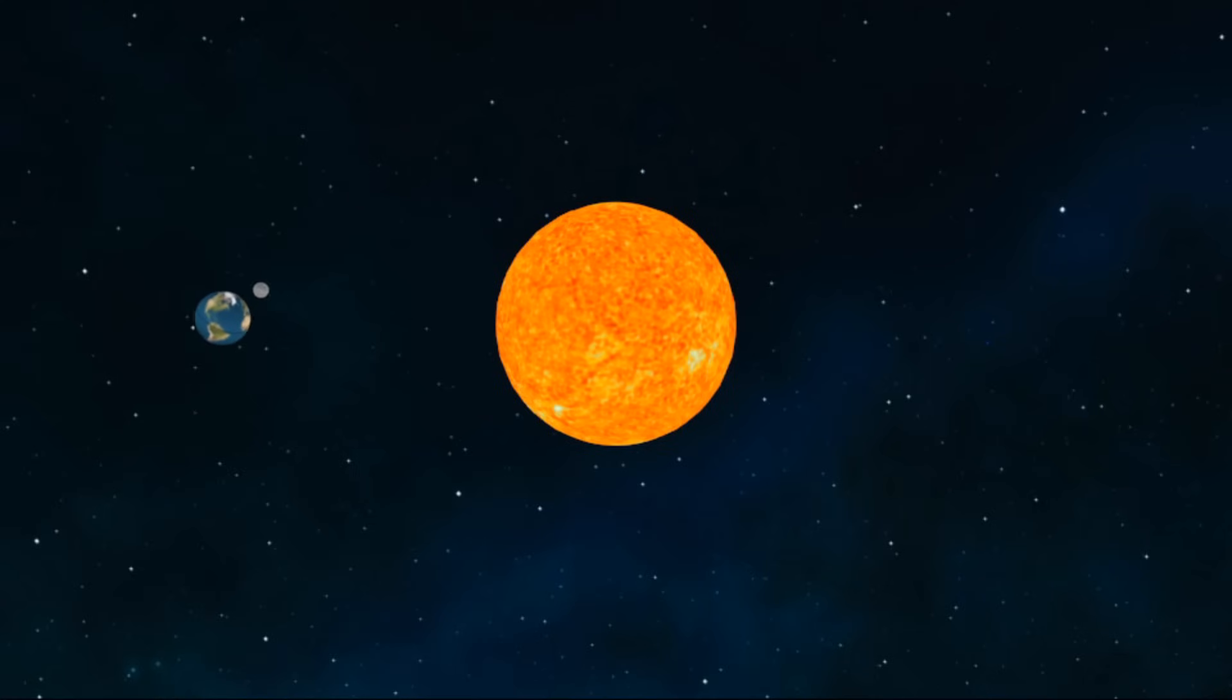The Sun, Earth, and Moon are three very important objects in our solar system. How these objects interact has a direct impact on life on Earth. It's important that you can describe and compare some basic physical characteristics of the Sun, the Earth, and the Moon.